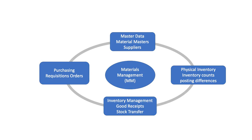The second component of the MM module is purchasing. Purchasing includes activities like getting quotes from vendors, creating purchase requisitions, and creating formal requests for goods or services called purchase orders.